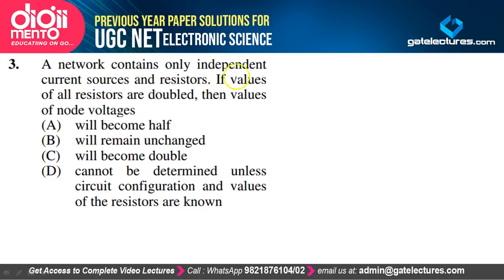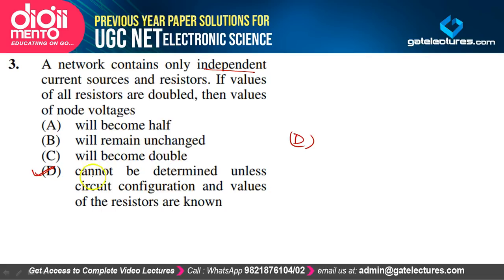A network contains only independent current sources and resistors. If the resistor values are doubled, the node voltages will: become half, remain unchanged, become double, or cannot be determined unless circuit configuration is known. Option D suits best — we cannot predict the change in node voltages without knowing the circuit diagram and specific configuration. So D is the correct answer.